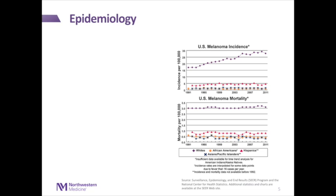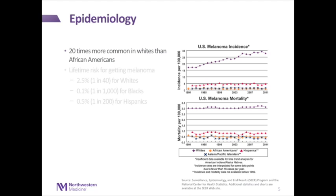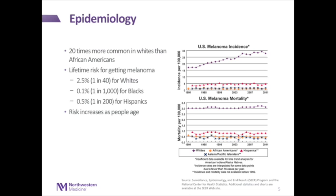Over the past 20 or so years, we can see that the incidence of melanoma in the U.S. has risen. But given the new treatments that have come along, the melanoma mortality has actually stayed about level. It is 20 times more common in whites than African Americans. The lifetime risk for melanoma is about 2.5% for whites, 0.1% for African Americans, and 0.5% for Hispanics. The risk increases as people age, and the average age is 63 years.